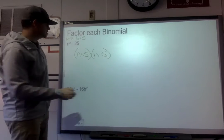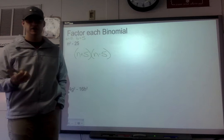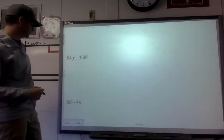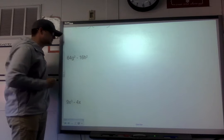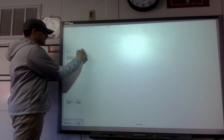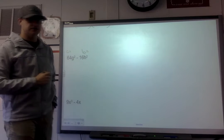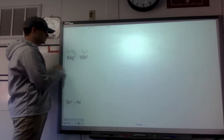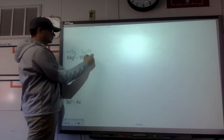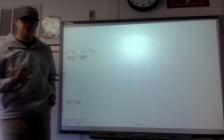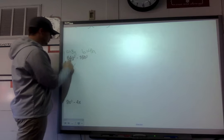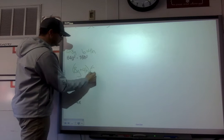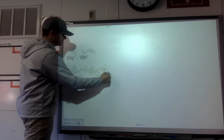It doesn't matter which binomial you put first — (n - 5)(n + 5) also works as your answer. Moving to the next example: 64g² - 16h². Check for perfect squares: the square root of 64 is 8, square root of g² is g, square root of 16 is 4, square root of h² is h. So this factors into (8g + 4h)(8g - 4h).